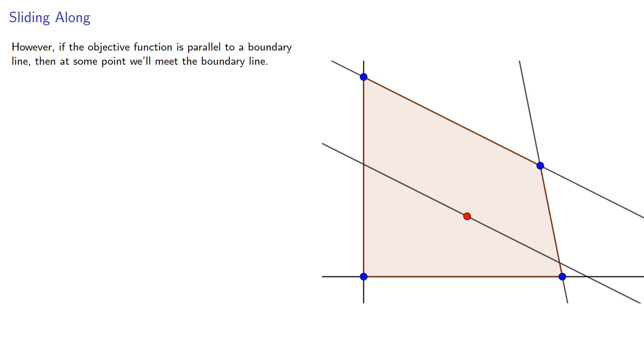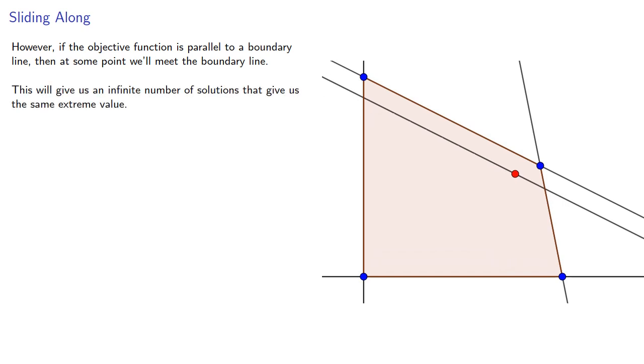However, if the objective function is parallel to a boundary line, then at some point we'll meet the boundary line. This will give us an infinite number of solutions that give us the same extreme value.